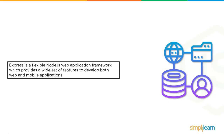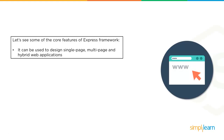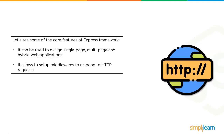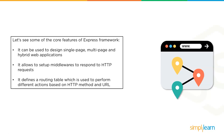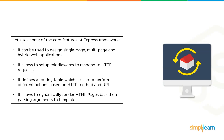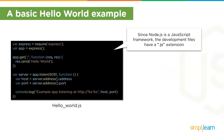Now let's learn about the Node.js Express framework. Express is a flexible Node.js web application framework that provides a wide set of features to develop both web and mobile applications. You can think of Express as a layer built on top of Node.js that helps manage the server and routes. Core features include designing single-page, multi-page, and hybrid web applications; setting up middleware to respond to HTTP requests; defining a routing table to perform actions based on HTTP method and URL; and dynamic rendering of HTML pages.